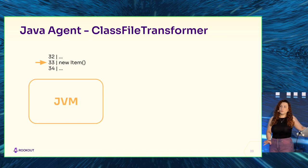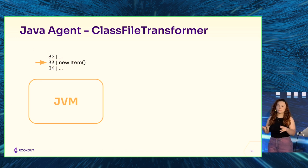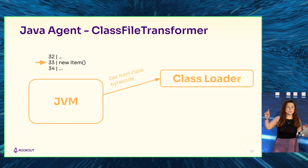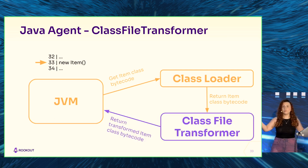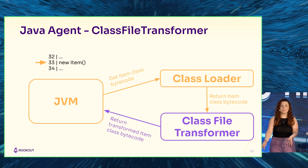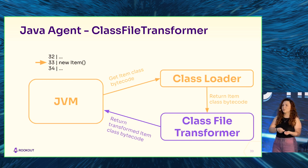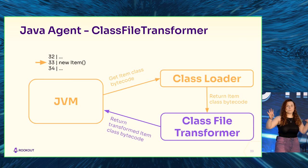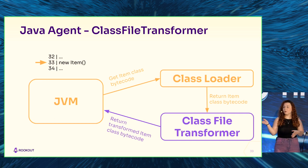What we can do with the instrumentation API is use a class file transformer. When the JVM requests the item class bytecode from the class loader, and the class loader returns it, before the JVM uses it, it calls our class file transformer. The class file transformer receives the item class bytecode and outputs a new item class bytecode - we can change it entirely or just change certain things. The JVM only knows the bytecode returned from our class file transformer. This means we can control any class in any way we want, as long as we're running as Java agents.